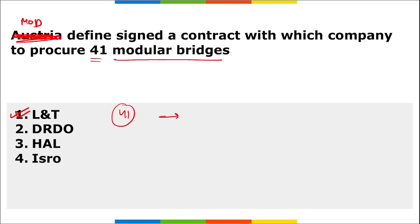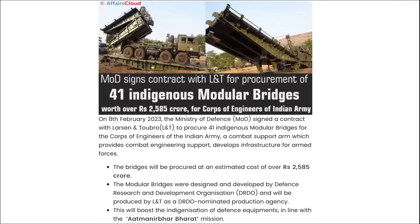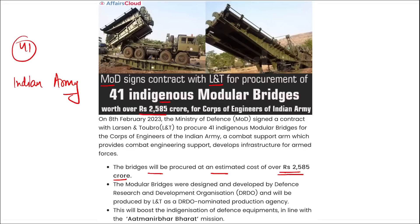These 41 modular bridges will cost around ₹2,585 crore. The Ministry of Defense signed a contract with L&T for the procurement of 41 indigenous — meaning built in India — modular bridges worth over ₹2,585 crore. These defense bridges have been procured for the Indian Army. The bridges were designed and developed by DRDO and will be procured by L&T and a DRDO-nominated production agency. This will boost the indigenization of defense equipment in line with the Atmanirbhar Bharat mission.